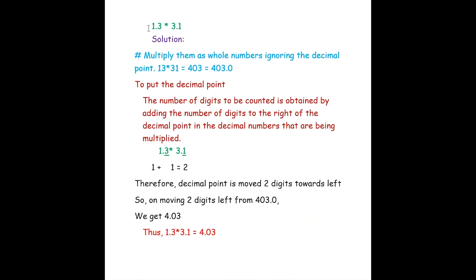The next question is 1.3 into 3.1. Both are decimal numbers. Ignoring the decimal points: 1.3 becomes 13 and 3.1 becomes 31. 13 into 31 is 403, expressed as 403.0.